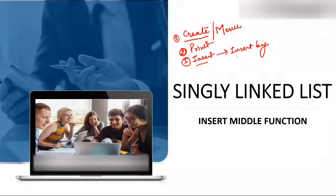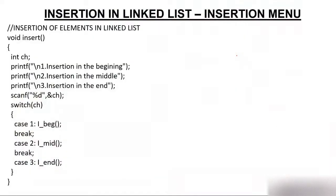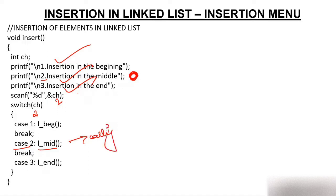Let's start with the insert middle function — when your job is to insert some node into an already created linked list somewhere in the middle, like the second, third, or fifth position. The position will be given by the user. In the linked list menu, under insert, we have three options: insert at the beginning, insert in the middle, or insert at the end. We'll press 2, switch will go to case 2, and case 2 calls the insert_mid function.